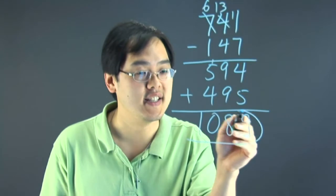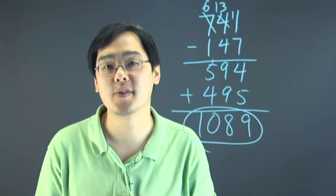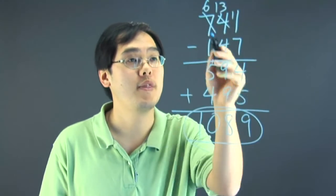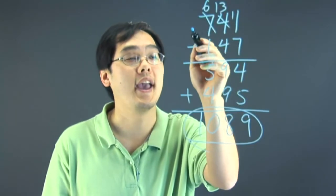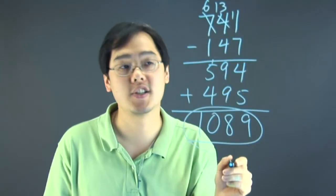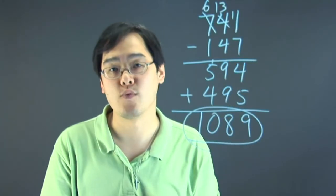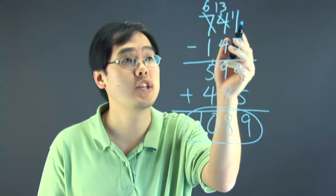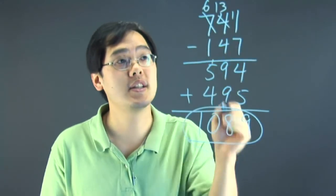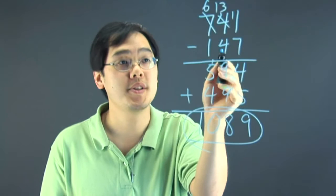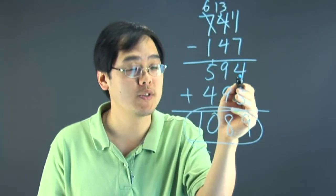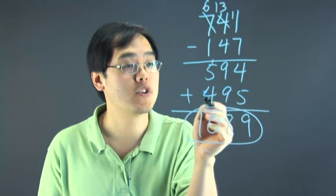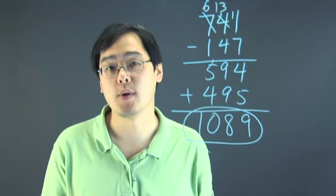This is the 1089 number reversal math trick because if you follow this pattern using a 3-digit number with decreasing digits and follow this, you're guaranteed to have 1089. So let's briefly review: take a 3-digit number with decreasing digits, reverse them and subtract, then take your result and add by the reversal of that number, and you'll always get 1089.